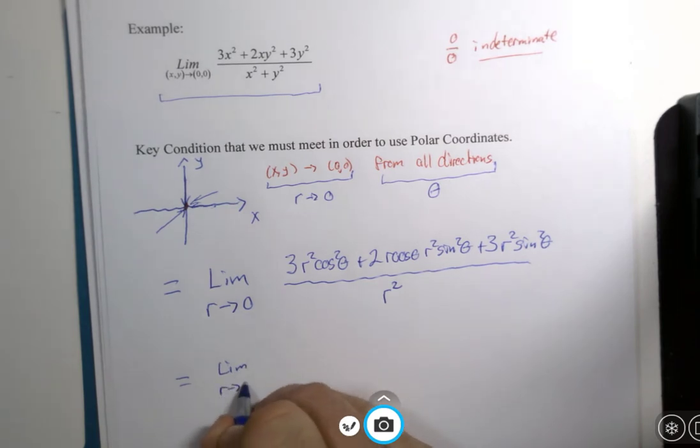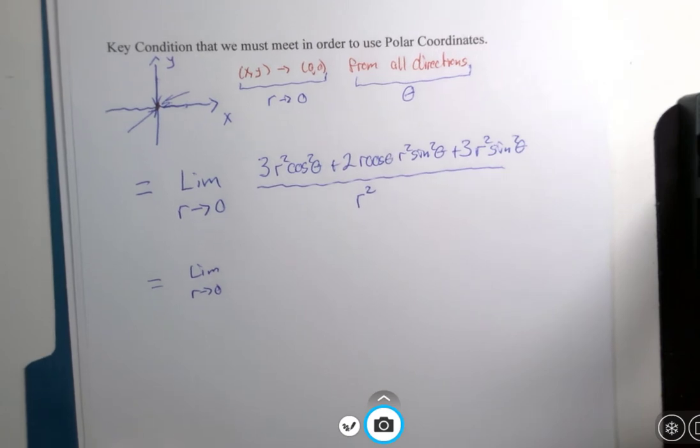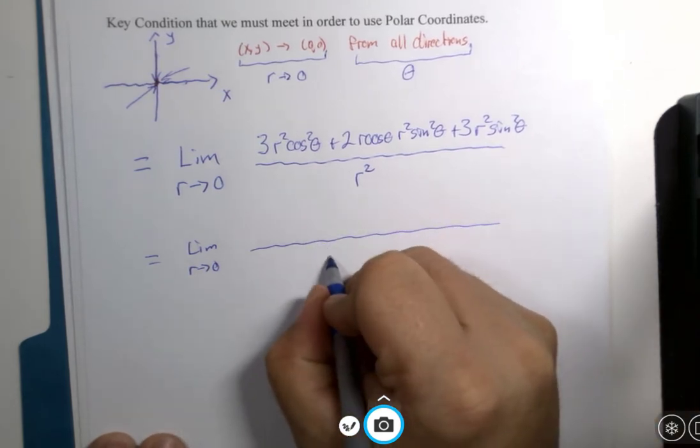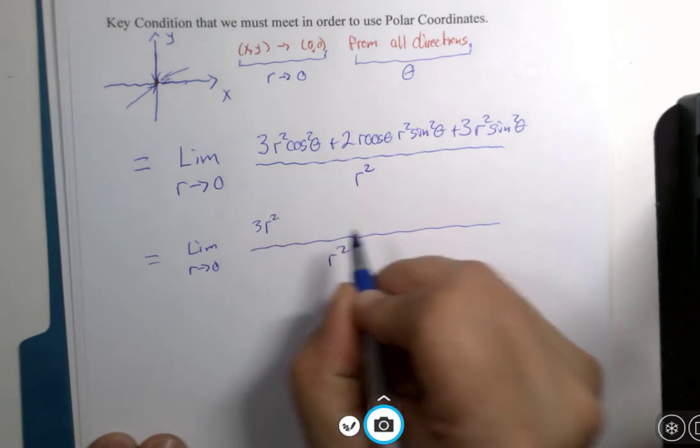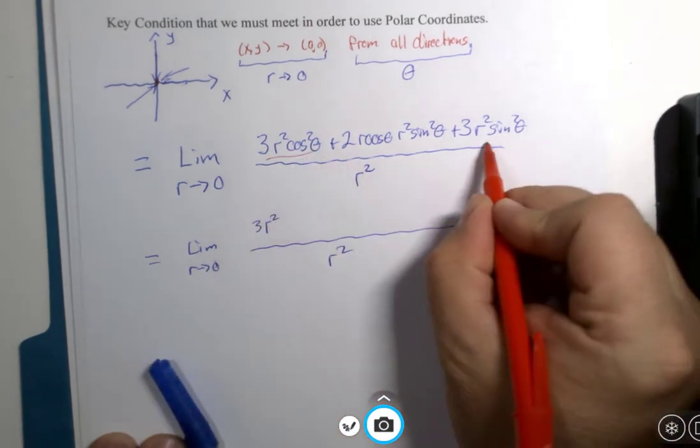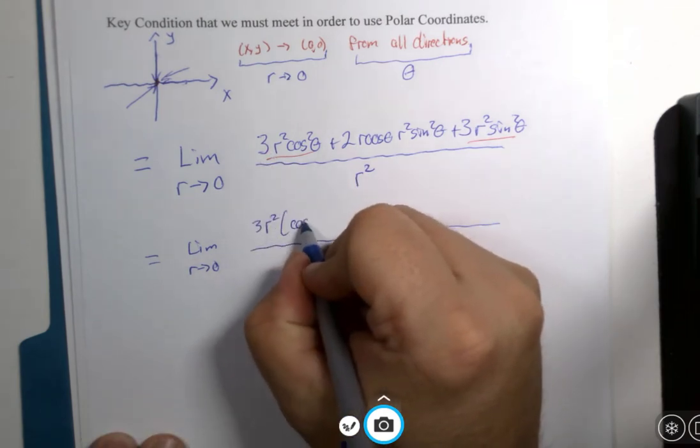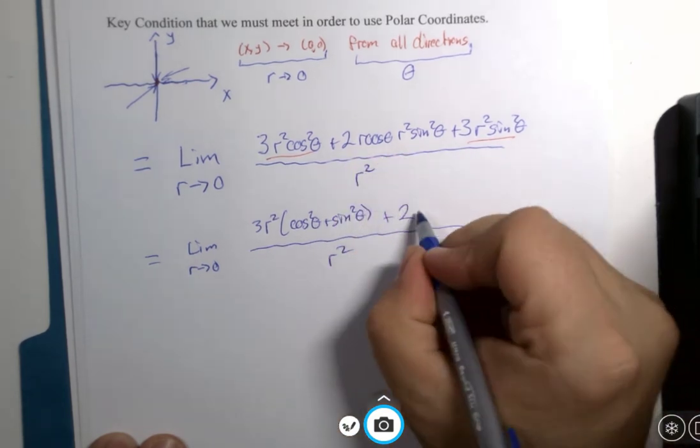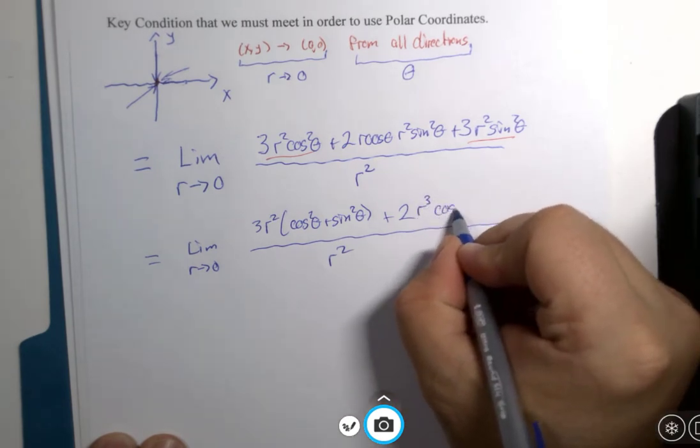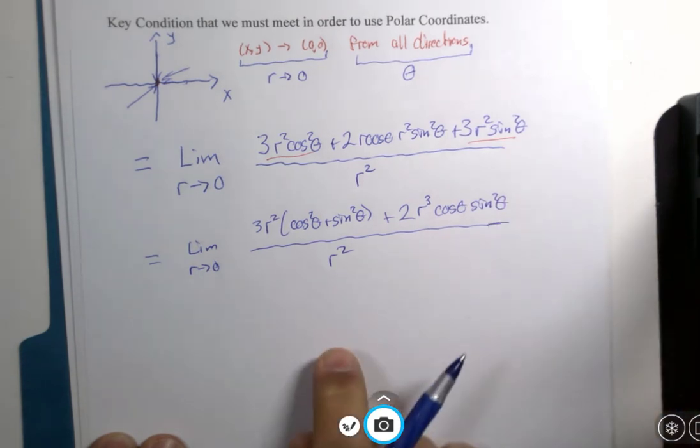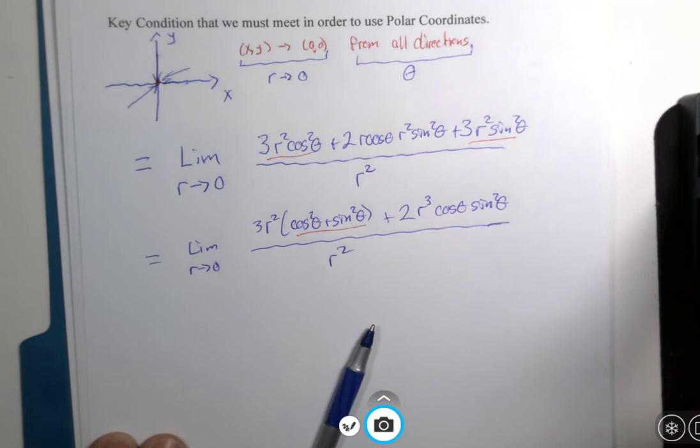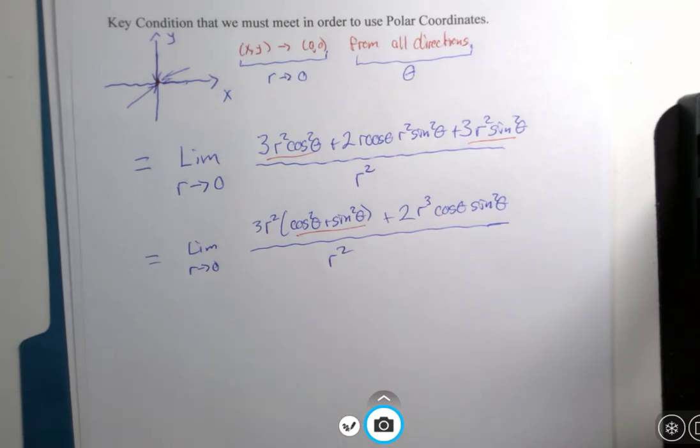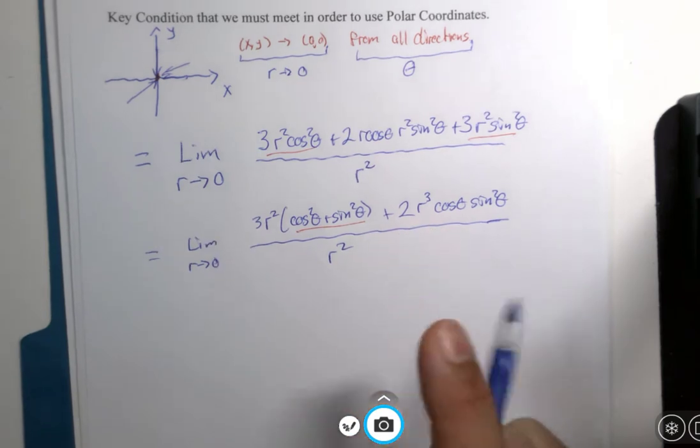My limit as r approaches zero. I'm going to move that off the screen now. I'm going to combine 3r squared, which is part of two terms here, and factor that will be cosine squared plus sine squared. That should look familiar. Plus 2r to the third power cosine of theta sine squared of theta. And this is equal to 1. Cosine squared plus sine squared, that is. So, if that's equal to 1, then look what I have here. I have r squared. I can factor r squared out of everything that's remaining.